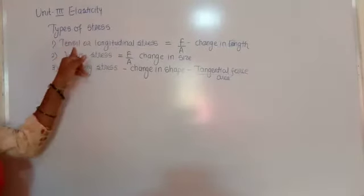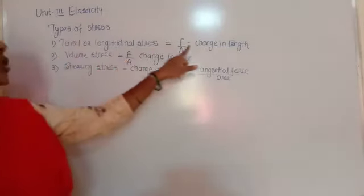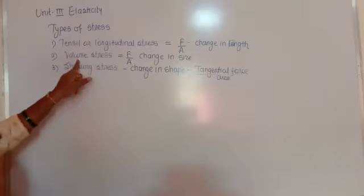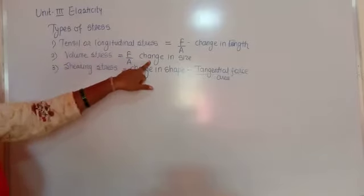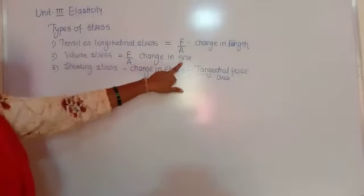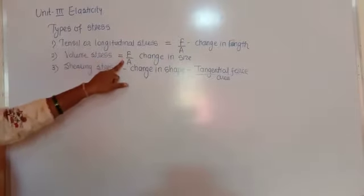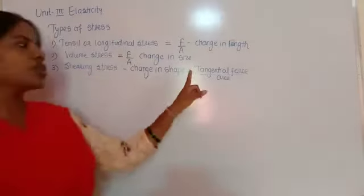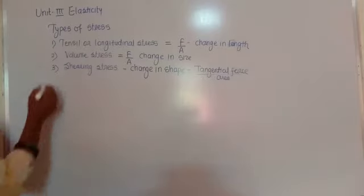To summarize: tensile or longitudinal stress involves change in length — force per unit area along the length. Volume stress involves change in size only — force per unit area acting normally on the surface. Shearing stress involves a tangential force producing change in shape without change in size. Now we move on to strain.